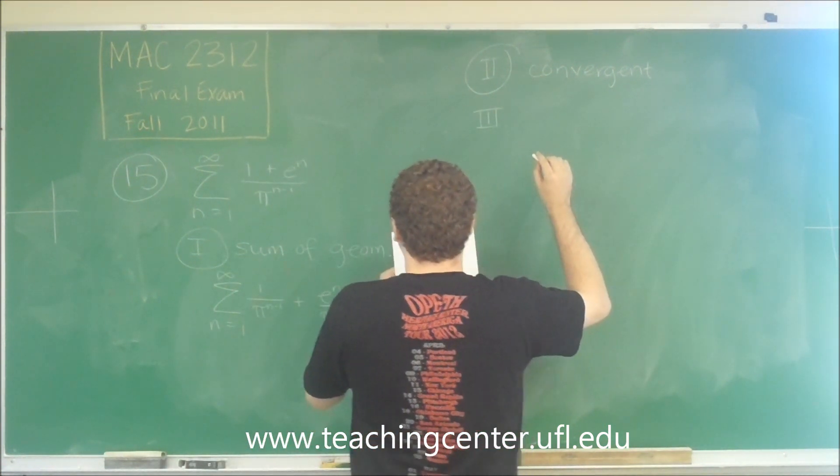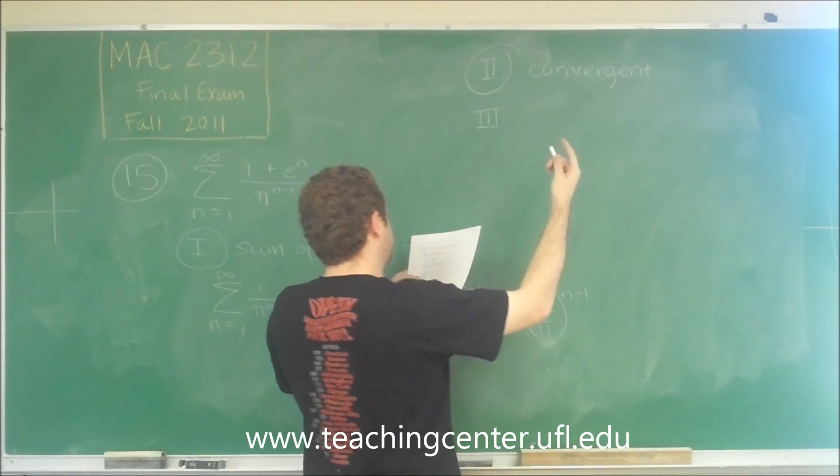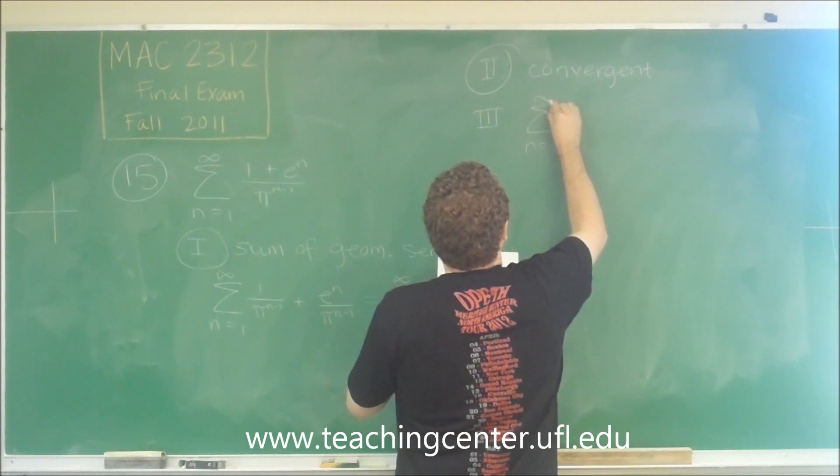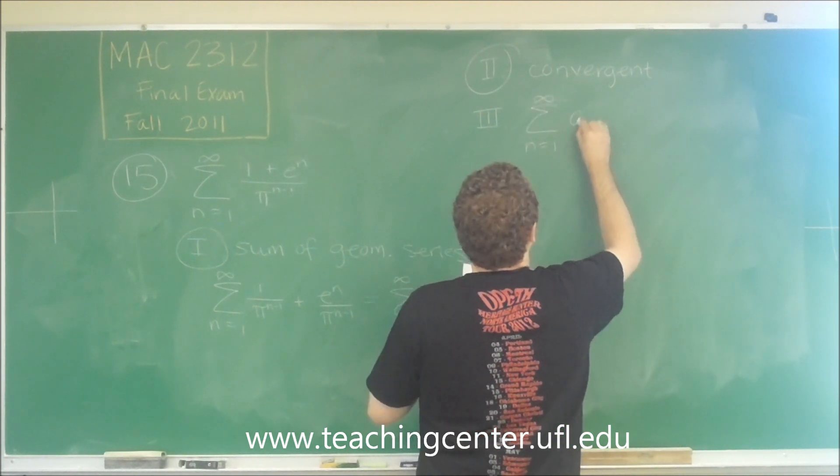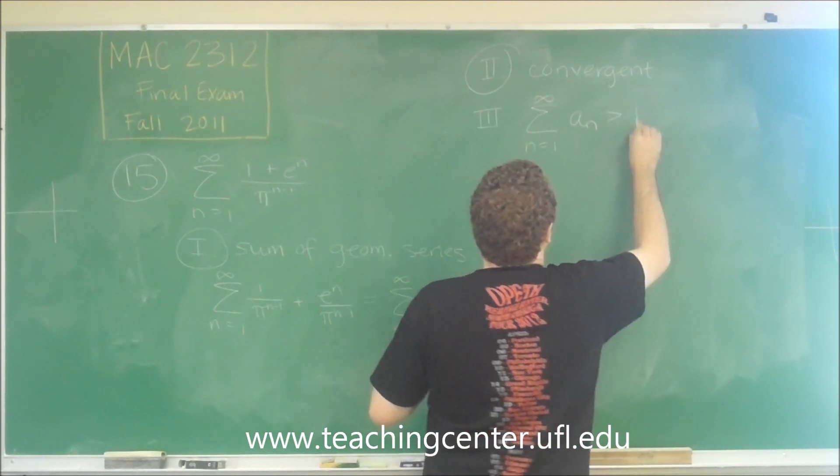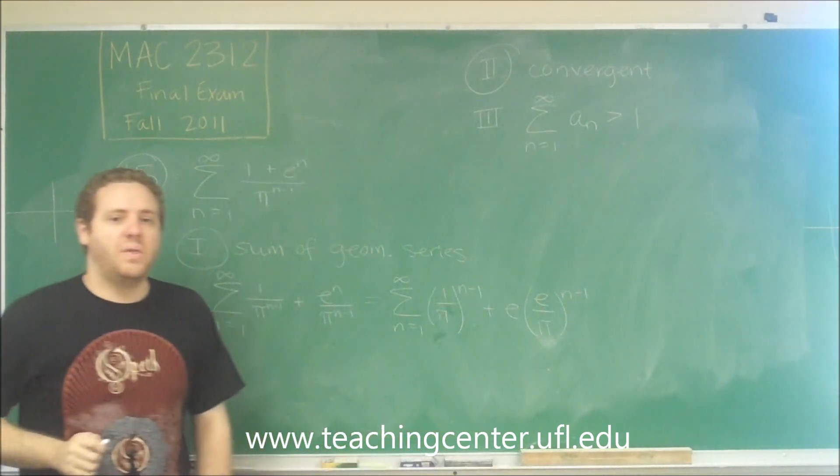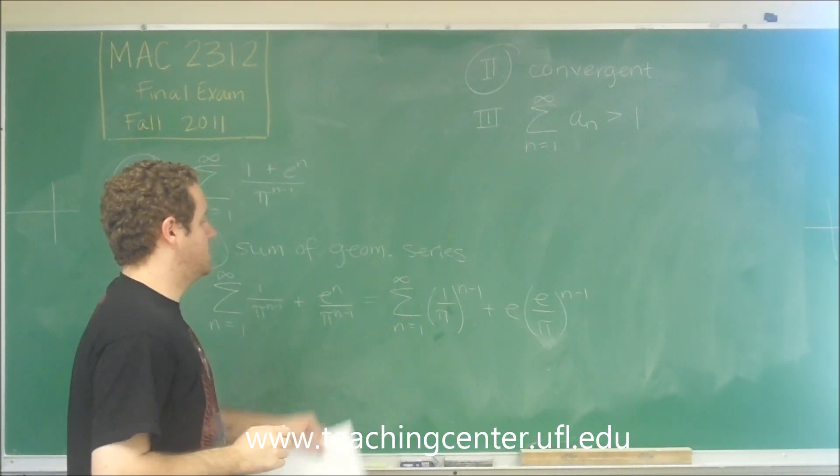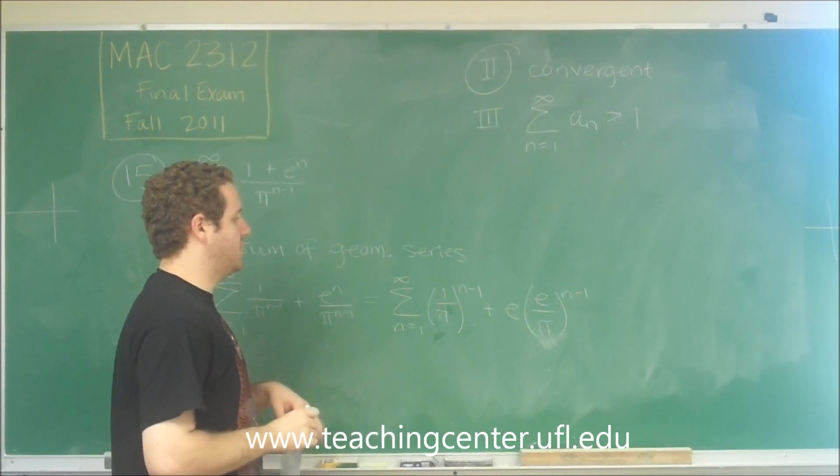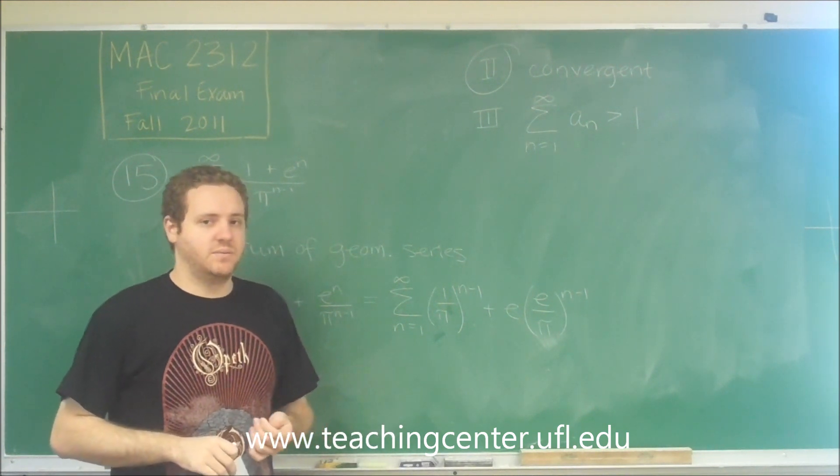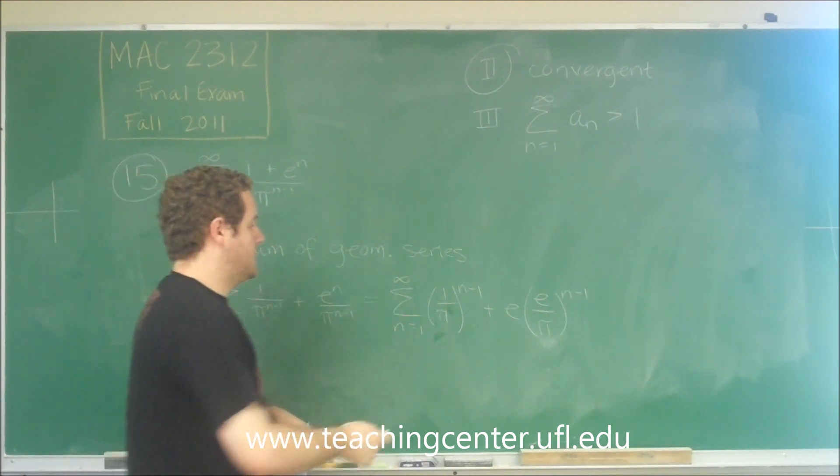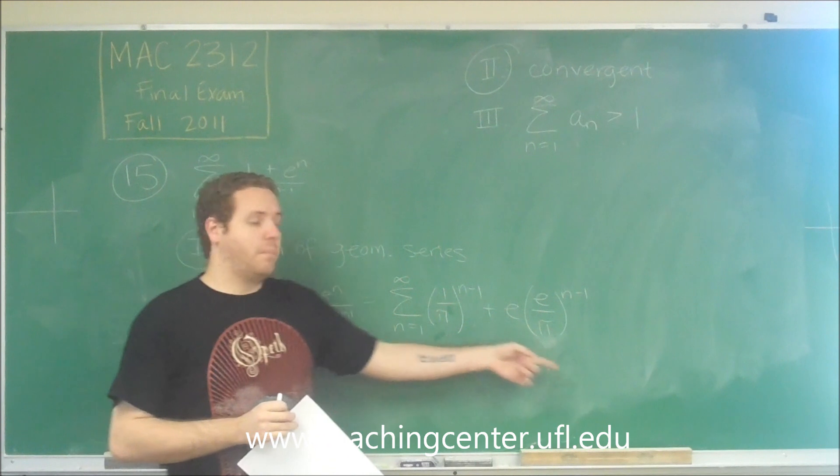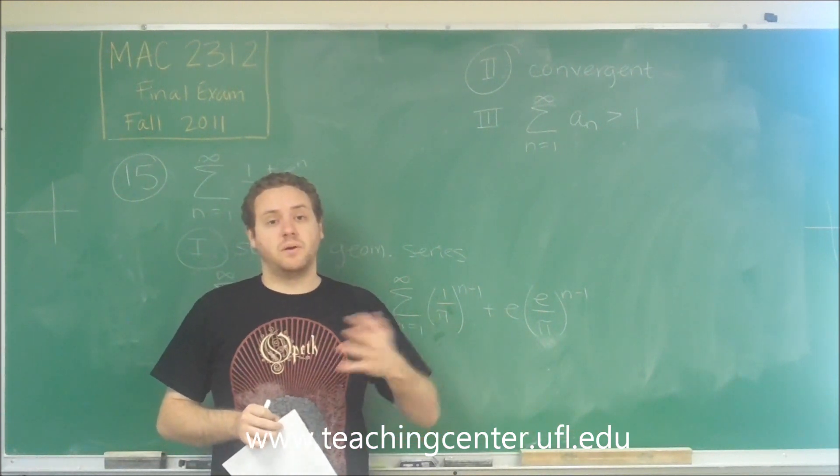And number 3, if it is convergent, which we already said it is, the sum of a sub n is greater than 1. Well that is pretty simple to test. So we can just try that with a couple of things. However, one way you can automatically test that without even really doing any work, is that you're adding up a bunch of numbers. In this case they're all positive, so you don't even have to worry about alternating.